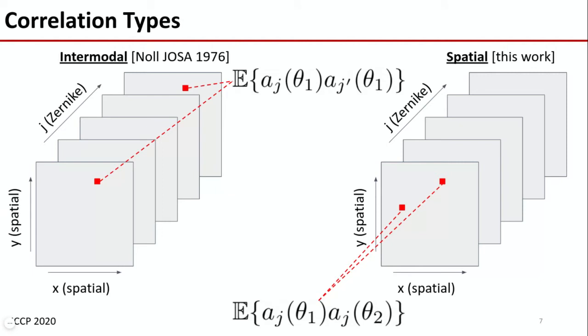By using the Zernike polynomials, we introduce another type of correlation, intermodal. That is, what is the correlation between two coefficients from the same point source? Luckily, Noll has already taken care of this. Therefore, we'd like to include both types of correlations in our simulator, intermodal and spatial.